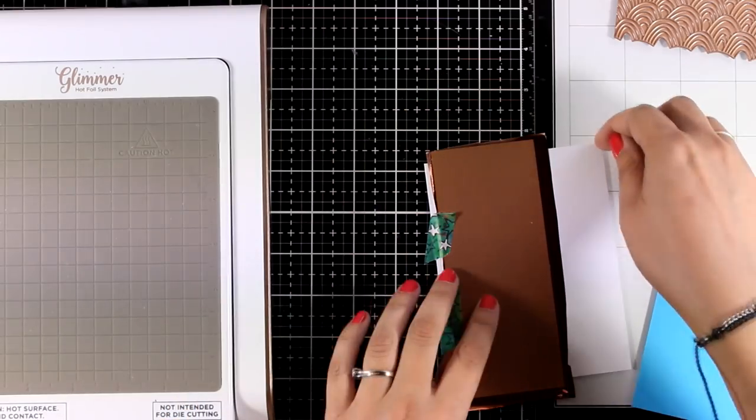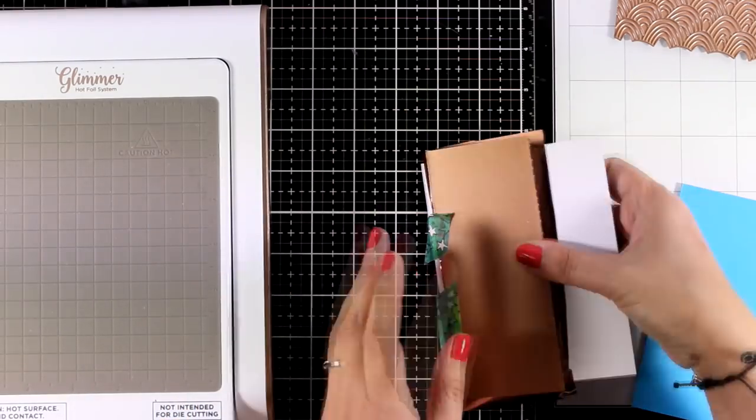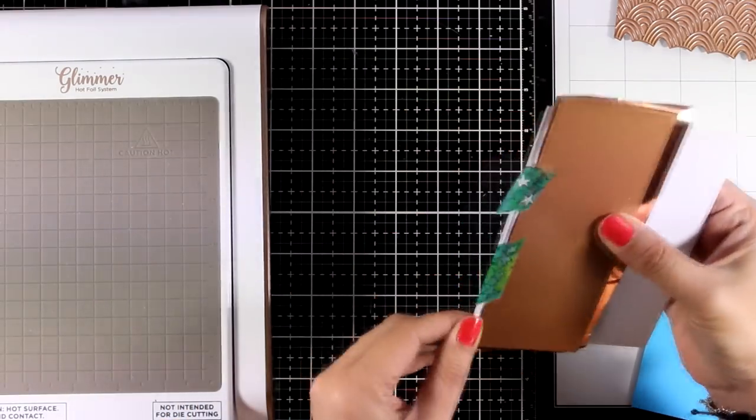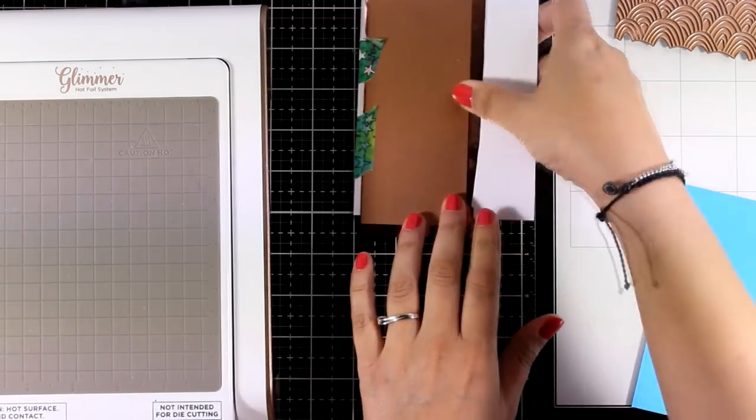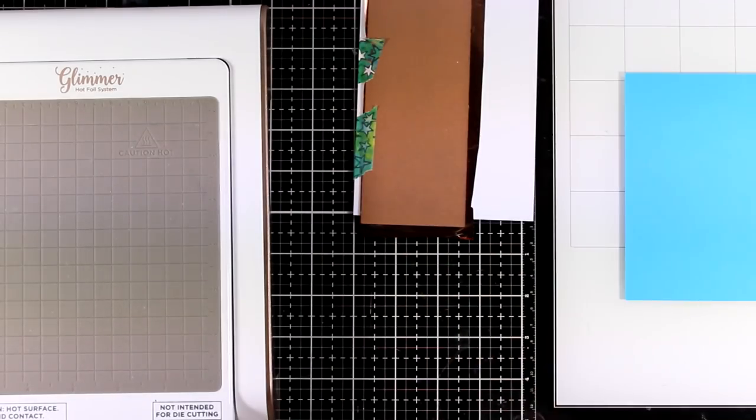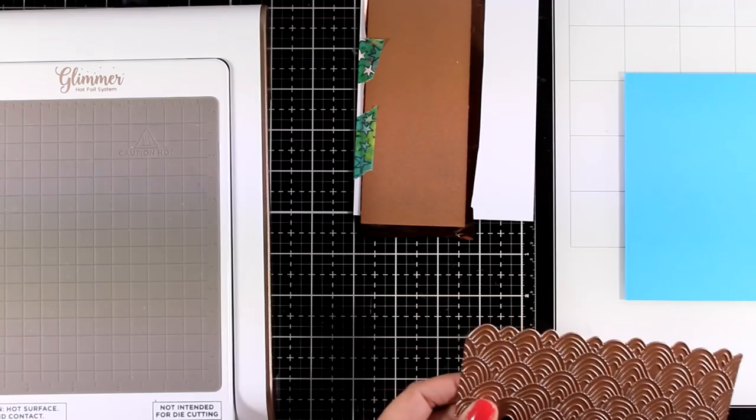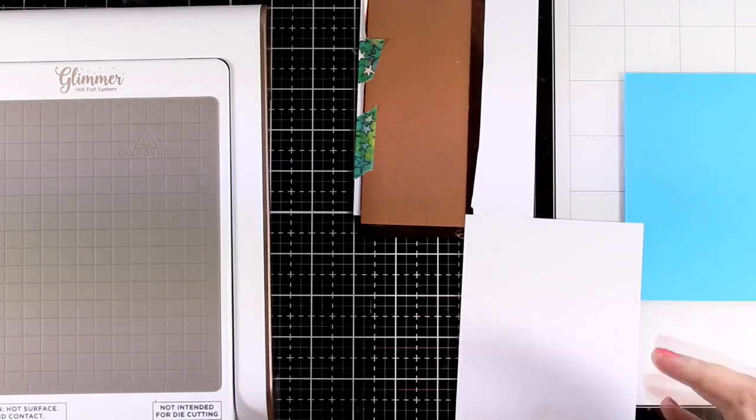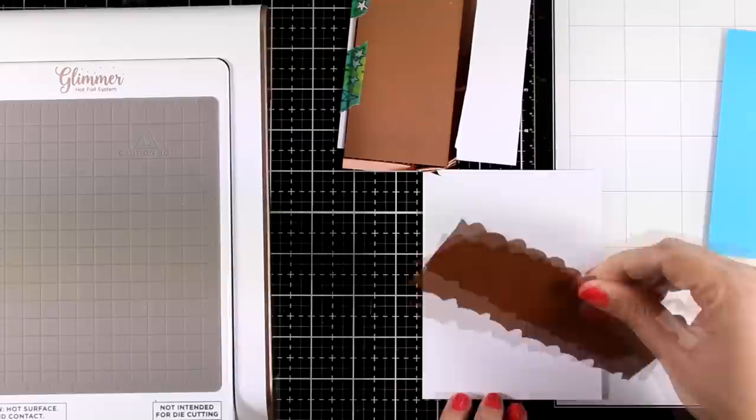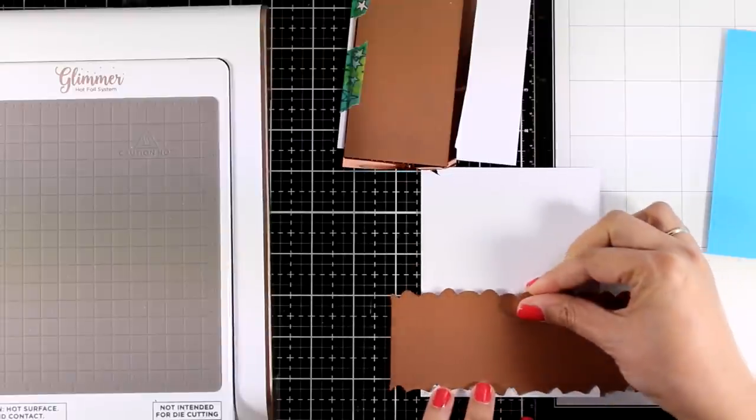While my Glimmer hot foil machine is warming up I am preparing some backgrounds. So for the first one I'm going with gold foil on top of white and I'm also going to create a couple of more backgrounds using the waves. I absolutely love this one and I think this one is my favorite from all those big background plates.